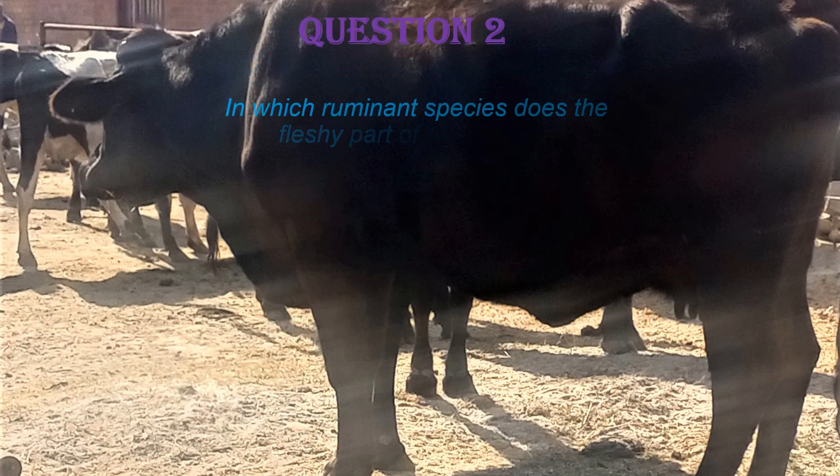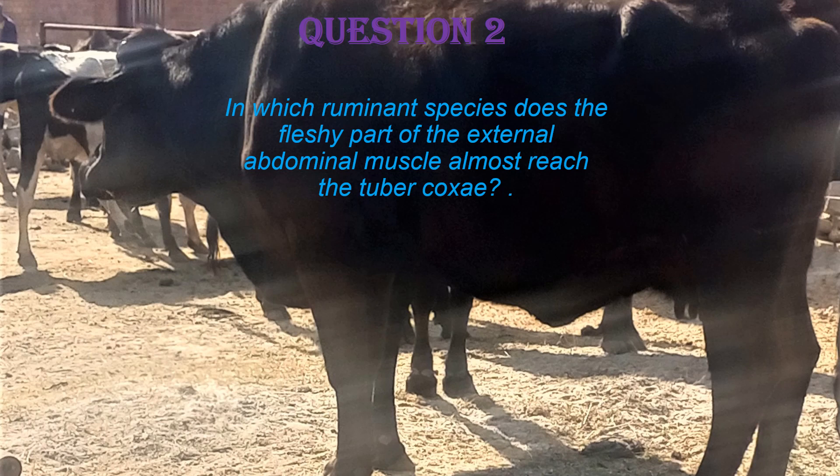Question two: in which ruminant species does the fleshy part of the external abdominal oblique muscle almost reach the tuber coxae? The answer is in the goat. In the goat, the muscular part of the external abdominal oblique muscle almost reaches the tuber coxae, while in the bovine the fleshy part only reaches about midway of the paralumbar fossa and connects to the tuber coxae via its aponeurosis.